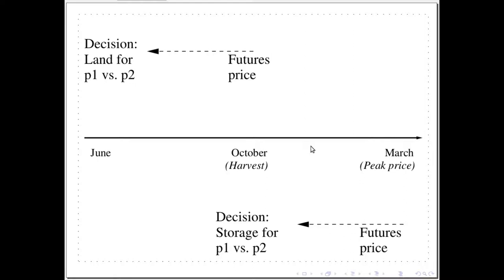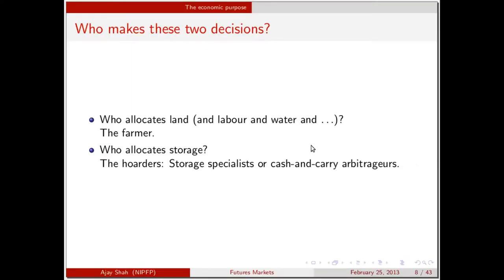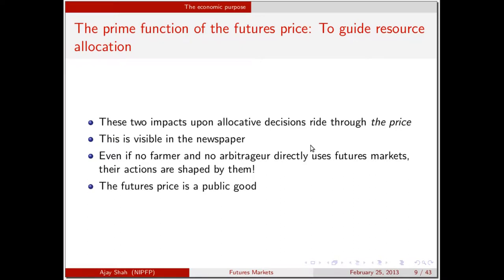The futures market guides the two main economic decisions of this sector: the storage decision and the production decision. The farmer makes the decision on allocating land, labor, water, and fertilizer. The storage decision is made partly by firms specializing in storage and partly through cash-and-carry arbitrage on the futures market. The allocative decision is made by looking at the price in the newspaper — you don't need to be a participant on the futures market.